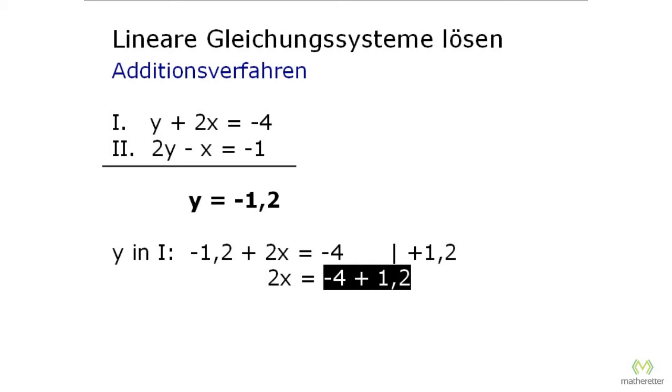Now we have 2x equals minus 4 plus 1.2, and minus 4 plus 1.2 is minus 2.8. Now we remove the 2 from the x by dividing by 2 on both sides. Then it says 2 times x divided by 2 is x, and over here minus 2.8 divided by 2 is of course minus 1.4. And we already have the solution for x.